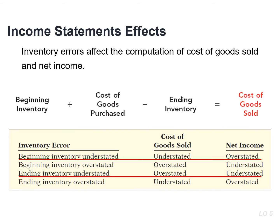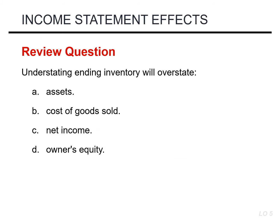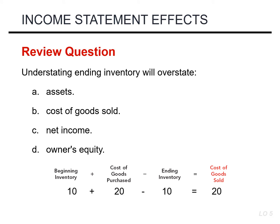This table shows the effects of inventory errors on the current year's income statement. To solve this multiple choice question, let's first solve for cost of goods sold. Let's assume our beginning inventory is 10, our purchases are 20, the ending inventory is 10, so our cost of goods sold is 20.